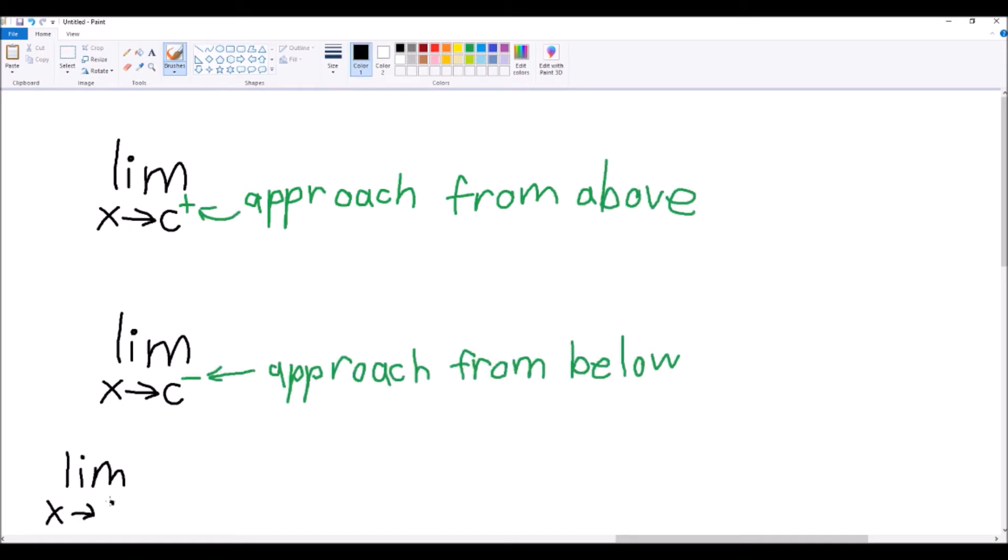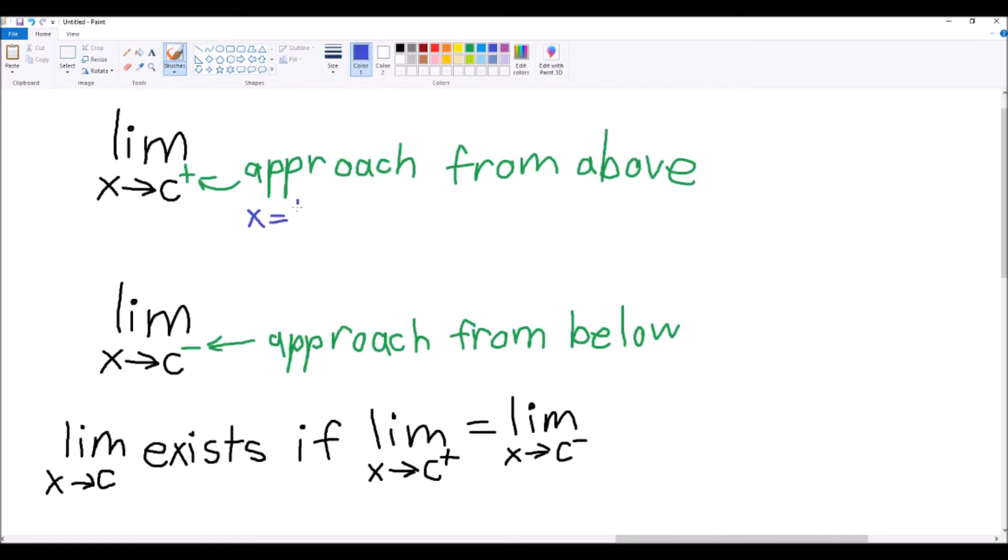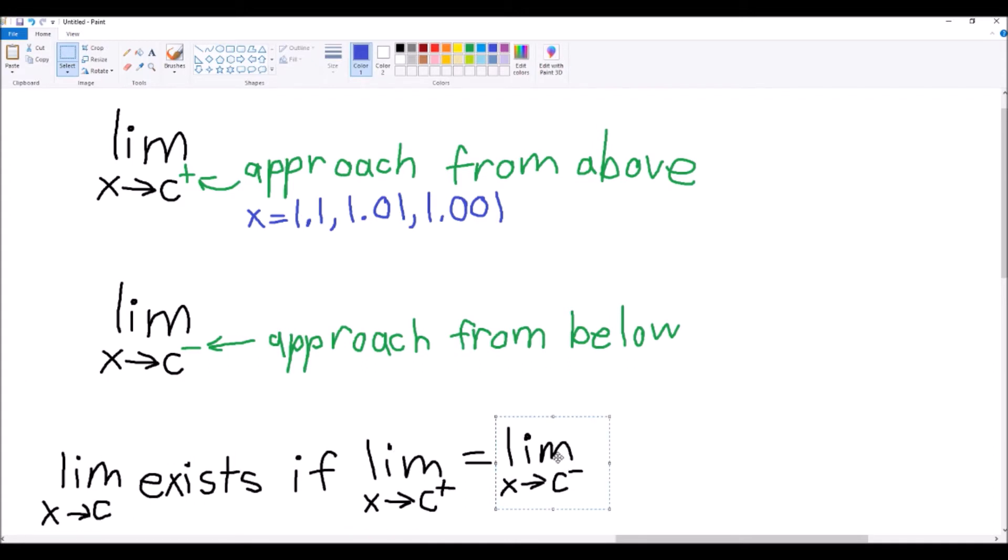How does this help us? The limit as x approaches 1 from above will only be dealing with the values related to 1.1, 1.01, 1.001, and so on. The limit as x approaches 1 from below will only be dealing with the values related to 0.9, 0.99, 0.999, and so on.